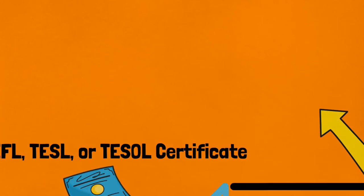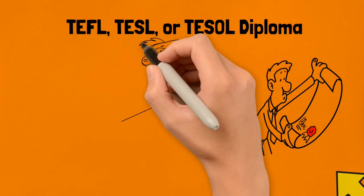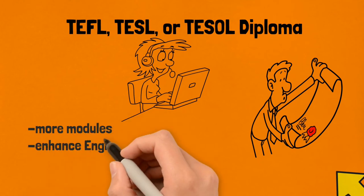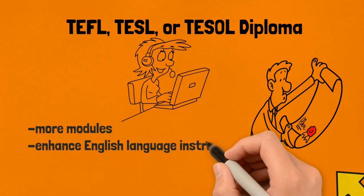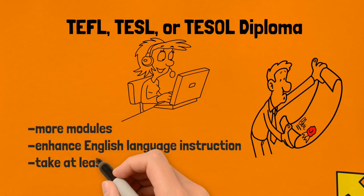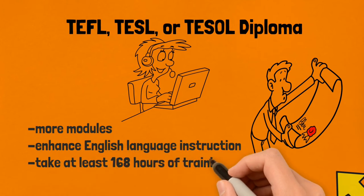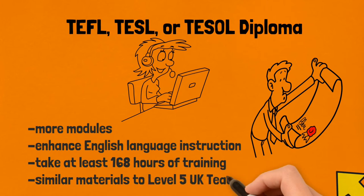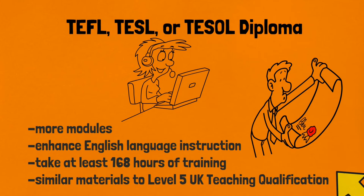If you want to pursue higher training, get a TESOL Diploma. Although this program is longer and contains more courses, teachers may use it to improve their instruction and become eligible for promotion. A TESOL certificate is the best choice for those who want to teach English overseas right away, whereas a TESOL Diploma is best for those who wish to further their training in English language teaching. Take at least 168 hours of training to receive instruction similar to Level 5 UK teaching qualification — a cheaper option than CELTA.